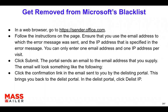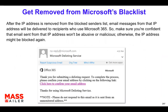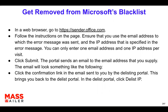Once you enter that, you would actually receive an email. You would have to authenticate and click on the confirmation link. That will take you to the portal. Once you go to that portal, just click on the Delist IP. The email that you receive will look like this, from Office 365. Just click on that link, which takes you to the portal where you click on Delist IP because you already entered the IP address in the initial step.